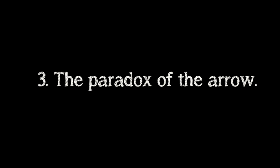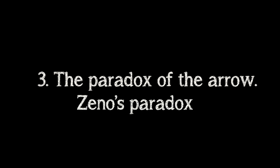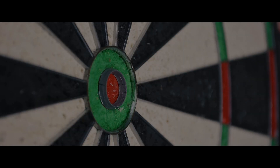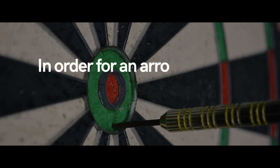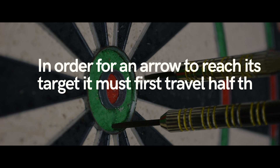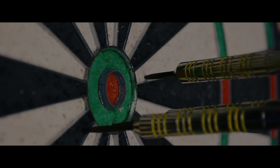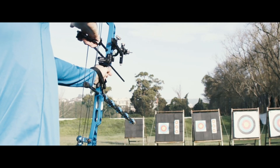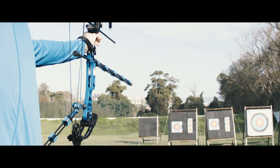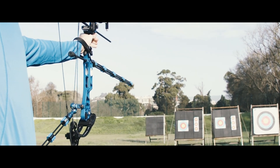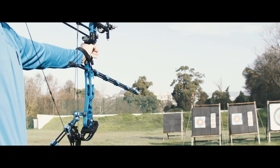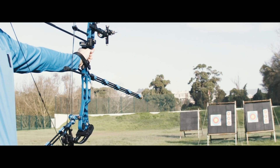The third paradox in our list is the paradox of the arrow, also known as Zeno's paradox. It states that in order for an arrow to reach its target, it must first travel half the distance. But before it can travel half the distance, it must first travel half of that distance, and so on ad infinitum. This creates the impression that motion is an illusion.